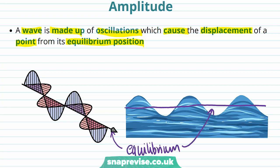For the electromagnetic wave, we can see that there's a displacement of the electric field and also the magnetic field from the equilibrium position. And on our mechanical wave, we can see that the water particles experience a displacement from the equilibrium position.